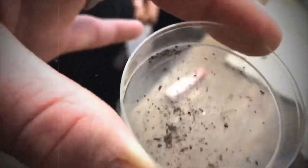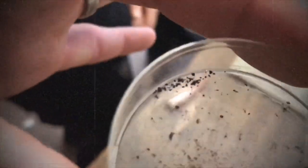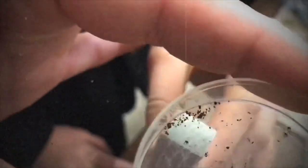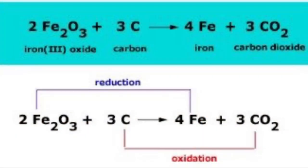This reaction or process can be shown in a word equation or symbol equation. As you'll see, we've got the iron oxide plus the carbon, giving you the iron and the carbon dioxide. Remember the processes of reduction and oxidation have changed that formula: 2 Fe₂O₃ + 3 C → 4 Fe + 3 CO₂.